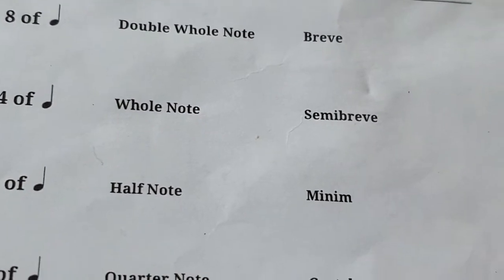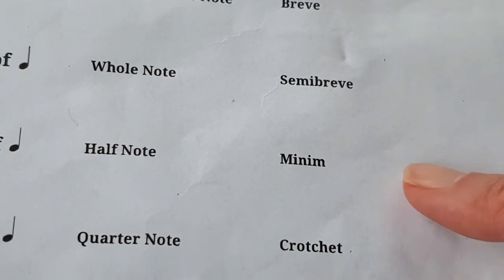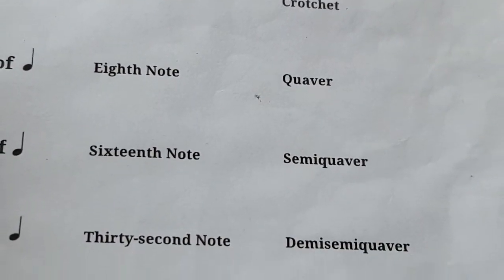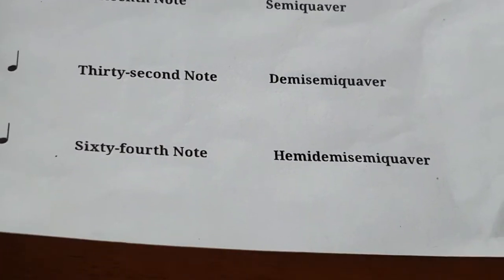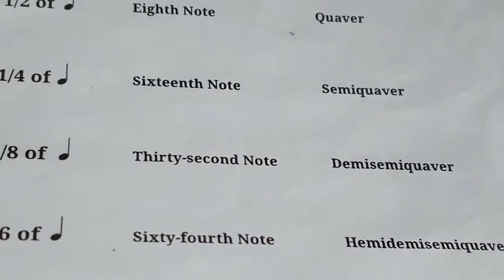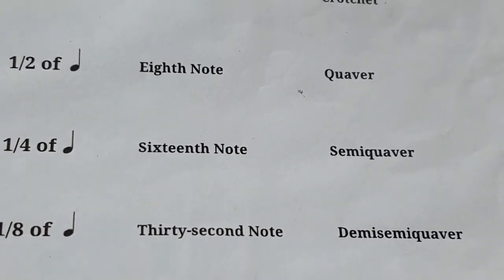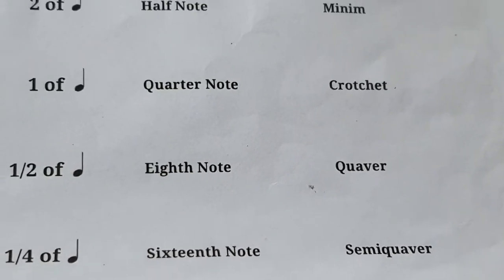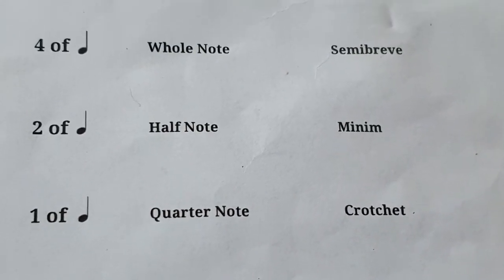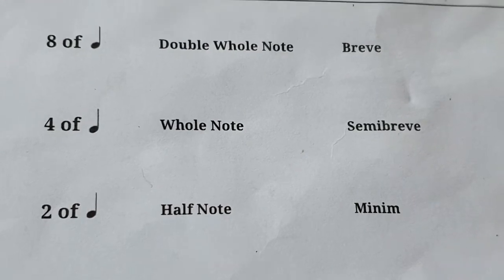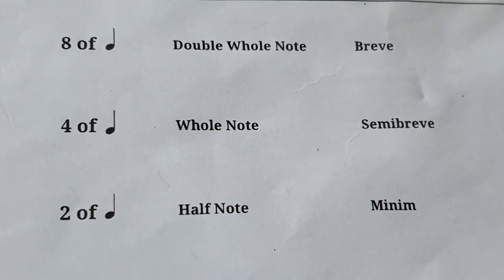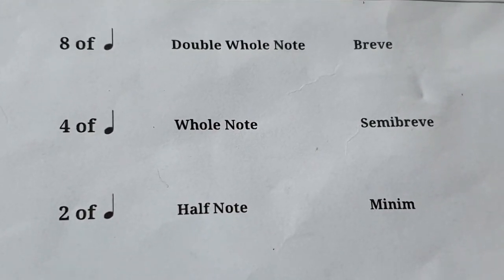The English version of the note names includes: breve, semibreve, minim, crotchet, quaver, semiquaver, demisemiquaver, and hemidemisemiquaver. These developed from ancient times — well, not really ancient, but a few hundred years ago.